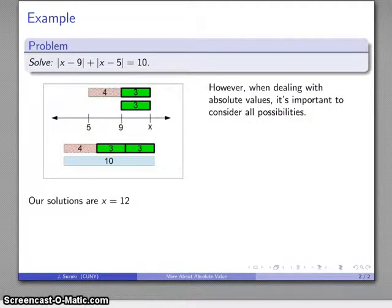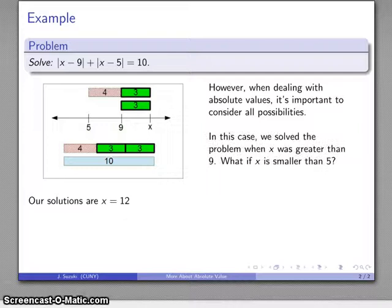Now, when we're dealing with absolute values, we actually do have to remember to consider all possibilities. Here, we assumed that x was greater than 9. But the only things I have fixed here are 5 and 9. So x could be greater than 9 over here someplace, x could also be less than 5, or x might be right here in the middle. So let's consider this situation where x is smaller than 5.